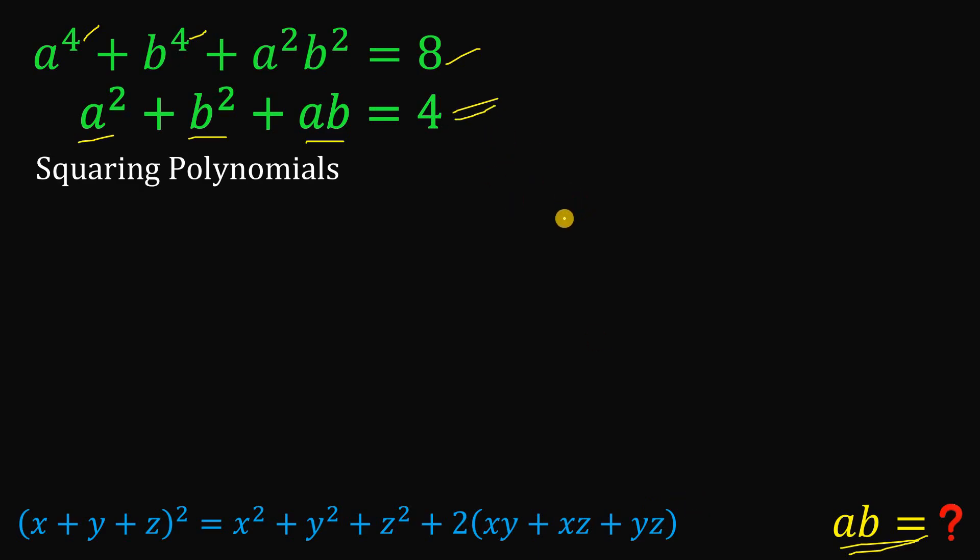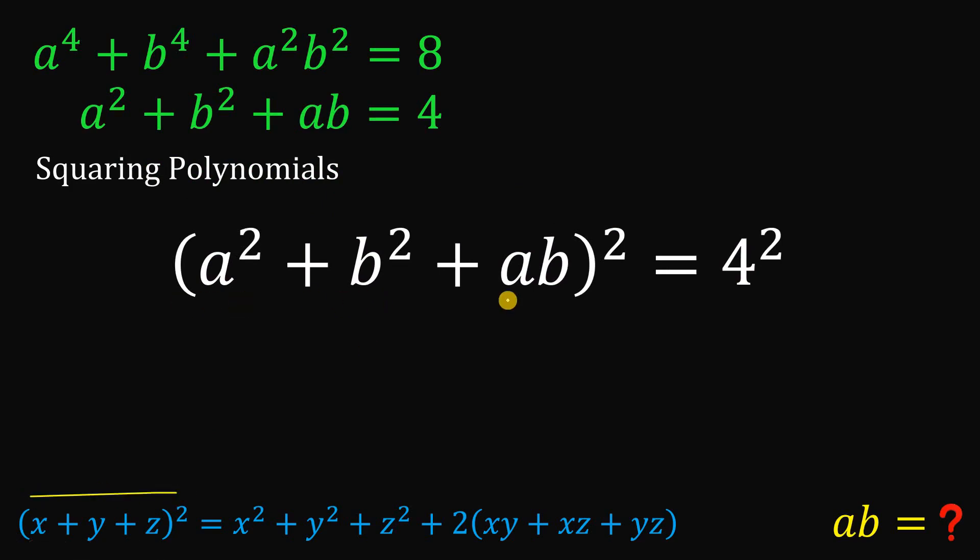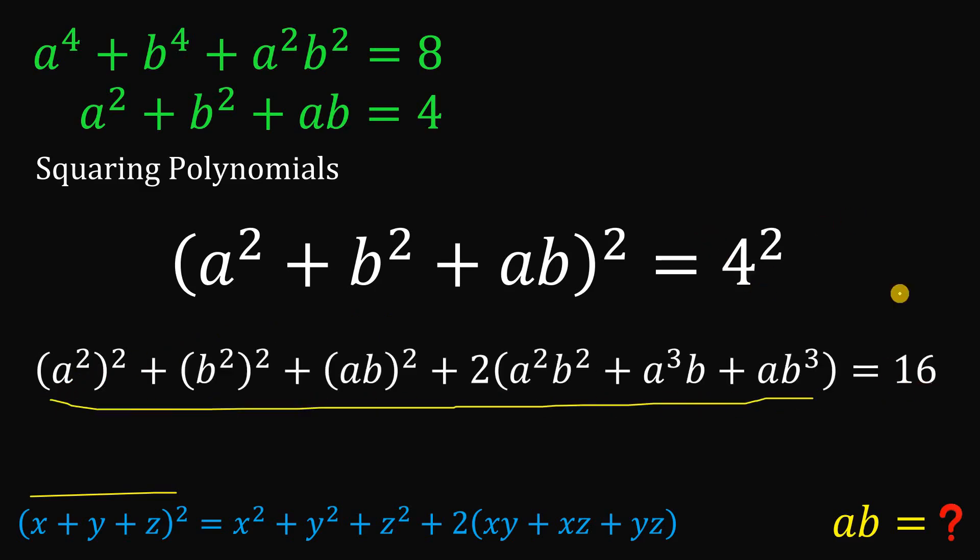So let's use the second equation and what we're going to do is to square on both sides. Because we will apply this identity to the left-hand side of our equation. And if we do that, we get something like this and equals 4 squared or simply equal to 16.